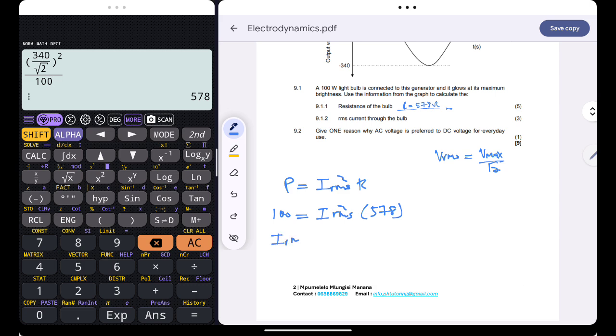Therefore I_rms squared is just equal to 100 divided by 578. I can simply take the square roots on both sides, and therefore my I_rms is just equal to the square root of 100 divided by 578.